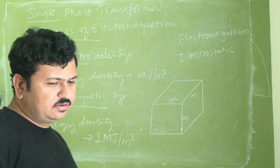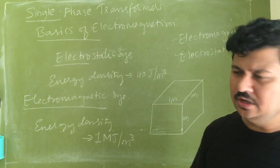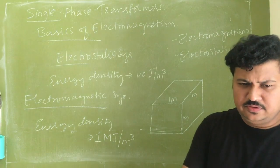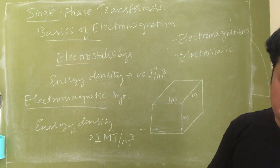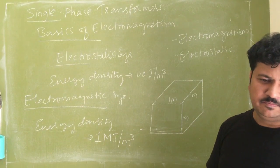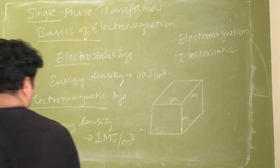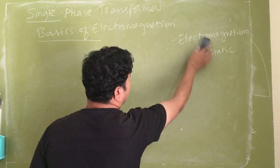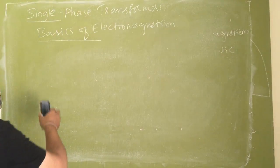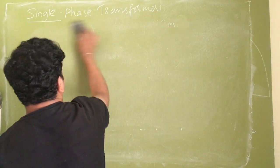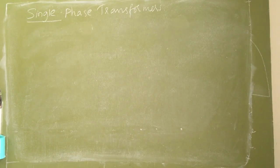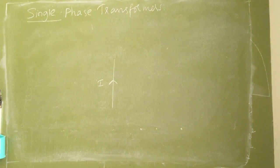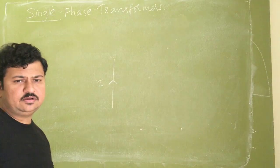That is why electromagnetism is a very important topic in understanding electrical science. Unfortunately, it has been taken out of the regular syllabus. Now, how is an electromagnetic field created? We can control it very conveniently by controlling the current. When I take a conductor and make it carry current, that current-carrying conductor will create a magnetic flux surrounding it.